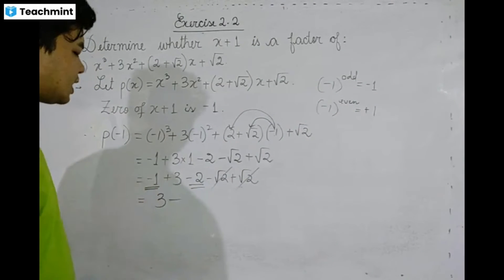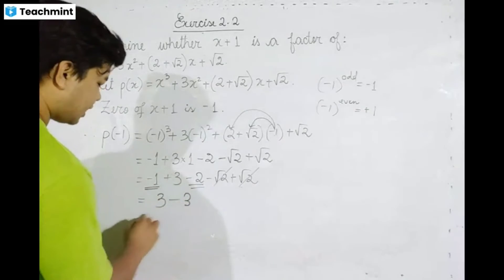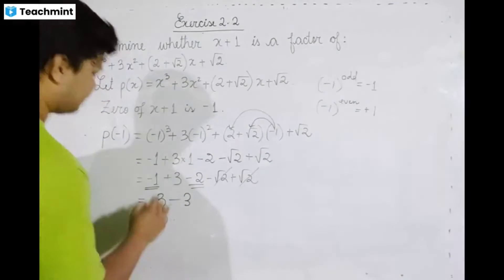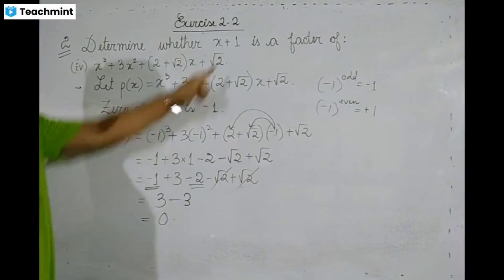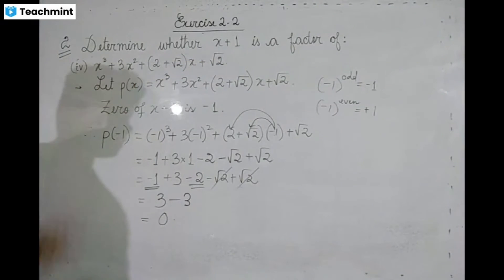2 minus 2 is 0. The answer is 0. Therefore the remainder is 0, and since P(−1) equals 0, x plus 1 is a factor of the polynomial.